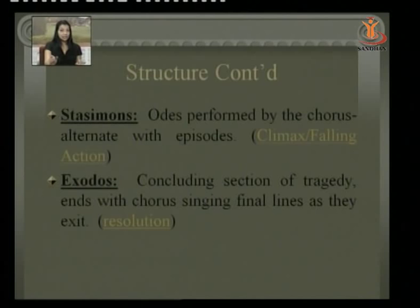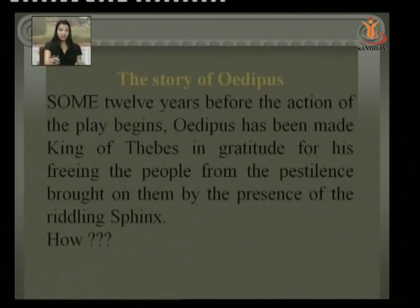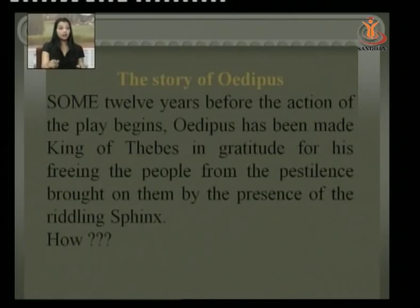The story of Oedipus as told in Sophocles' play begins about 12 years before the action of the play. Oedipus has been made king of Thebes in gratitude for freeing the people from the pestilence brought on them by the presence of the riddling Sphinx. Let's see what the Sphinx was.